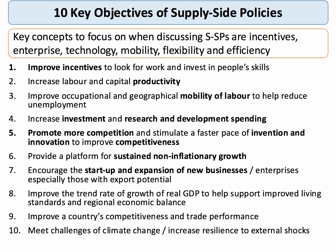So what are some of the objectives of supply side policies? There are 10 key supply side aims to consider. The key when discovering supply side policies is to focus on important supply side words: incentives, enterprise, technologies including innovations, mobility, flexibility, and economic efficiency. Supply side policies essentially try to improve incentives for people to look for work and also invest in people's skills in a constantly changing world of work.